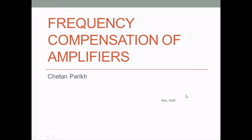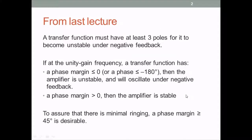This lecture will talk about frequency compensation of amplifiers. In the last lecture we discussed stability. What we discovered was that the transfer function must have at least three poles for it to potentially be unstable under negative feedback. Such an amplifier will be unstable if at the unity gain frequency the phase margin is less than or equal to zero, or the phase is less than or equal to minus 180 degrees — it will oscillate under negative feedback. If the phase margin is greater than zero the amplifier is stable, but for minimal ringing a phase margin greater than or equal to 45 degrees is desirable.